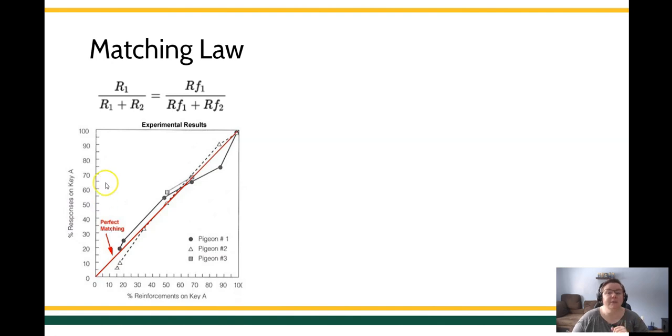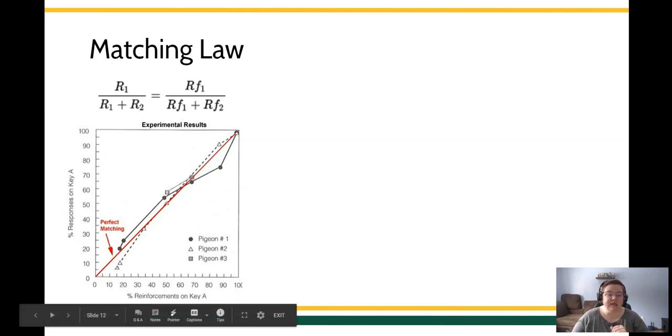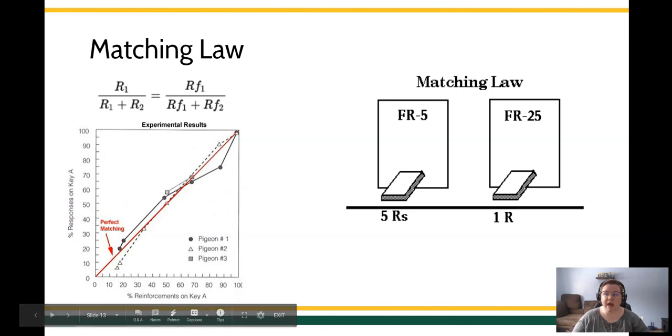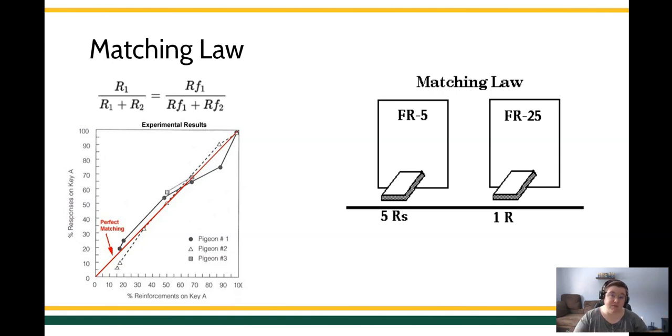That's pretty confusing. To make it a little bit easier, think about a simple creature - rat, pigeon - in an operant chamber. Say they're presented with what I'm showing you here, a photo of two different levers. They can press the left lever, which is on what's called a fixed ratio 5 schedule, which means that for every five times they press that lever, they're going to earn a reinforcer, versus an FR-25 schedule, which means that every 25 times they press that lever, they're going to earn a reinforcer.